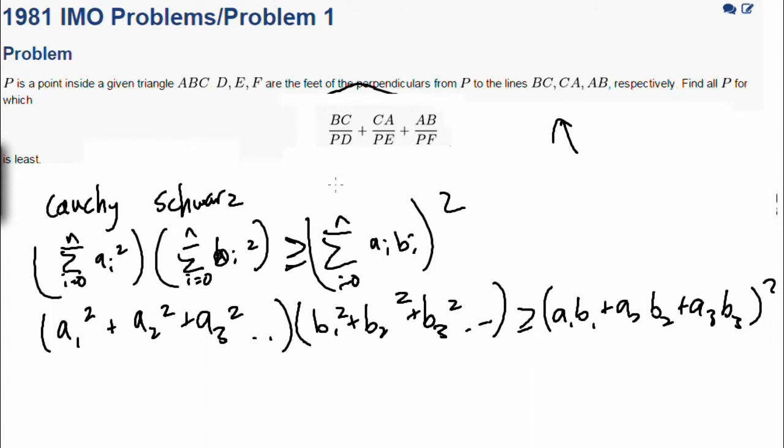a1 squared plus a2 squared plus a3 squared dot dot dot multiplied by b1 squared plus b2 squared plus b3 squared dot dot dot is greater than or equal to a1 b1 plus a2 b2 plus a3 b3 squared. And this is a really useful inequality, and we'll try it out today. So what I want you to do is look at this problem and try to solve it, and keep in mind that we're going to be using this inequality. Even though it's a geometry problem, it's possible to use this inequality to solve in a really eloquent way.